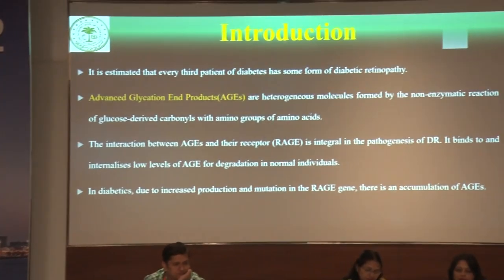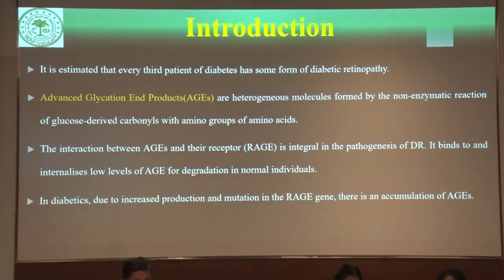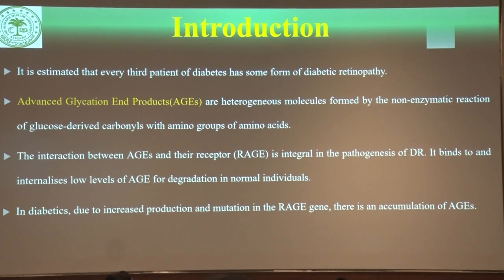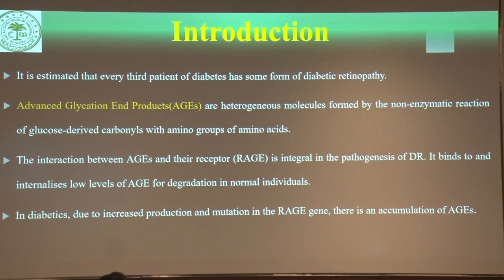Dr. Pragya Ahuja presented on predicting genetic predisposition for diabetic retinopathy through RAGE SNP analysis. Every third diabetic patient has some form of diabetic retinopathy. Advanced glycation end products (AGEs) are formed by non-enzymatic reaction between glucose-derived carbonyls and amino groups. The interaction between AGEs and their receptor RAGE is integral in the pathogenesis of diabetic retinopathy. Normally, RAGE internalizes low levels of AGEs and metabolizes them; in diabetes, excessive production overwhelms this process.